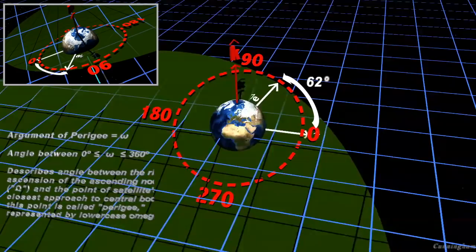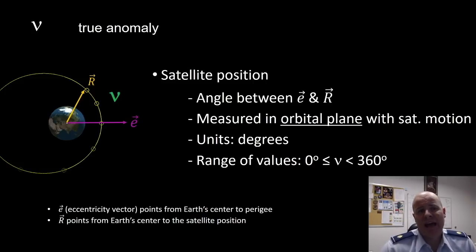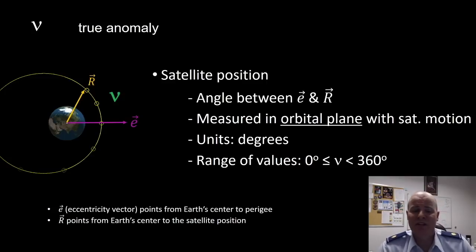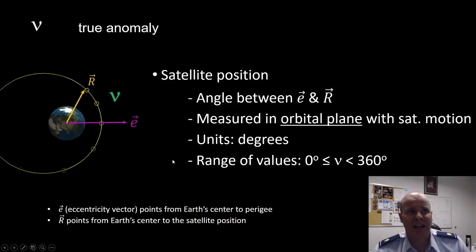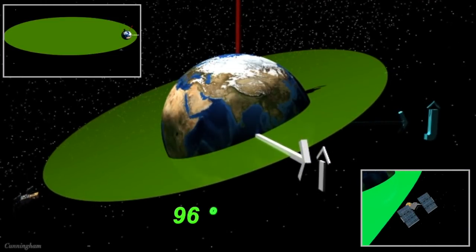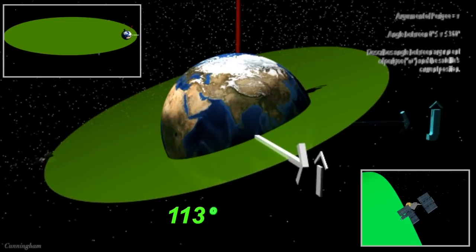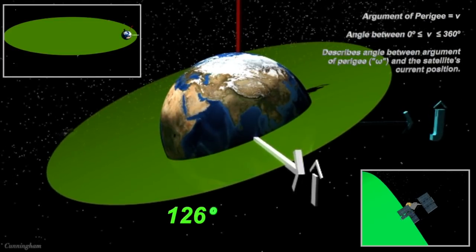Lastly, we have our true anomaly, which defines our satellite position within our orbit. The angle between E and R is that of true anomaly. It's measured in the orbital plane in the direction of satellite motion. Its units are given in degrees, and it can have a range of values between 0 and 360. The eccentricity vector E points from Earth's center to perigee, and R points from Earth's center to the satellite position. The relationship between E and R is given as true anomaly on our equation sheet. Here's what it looks like for a true anomaly to change in our orbit.